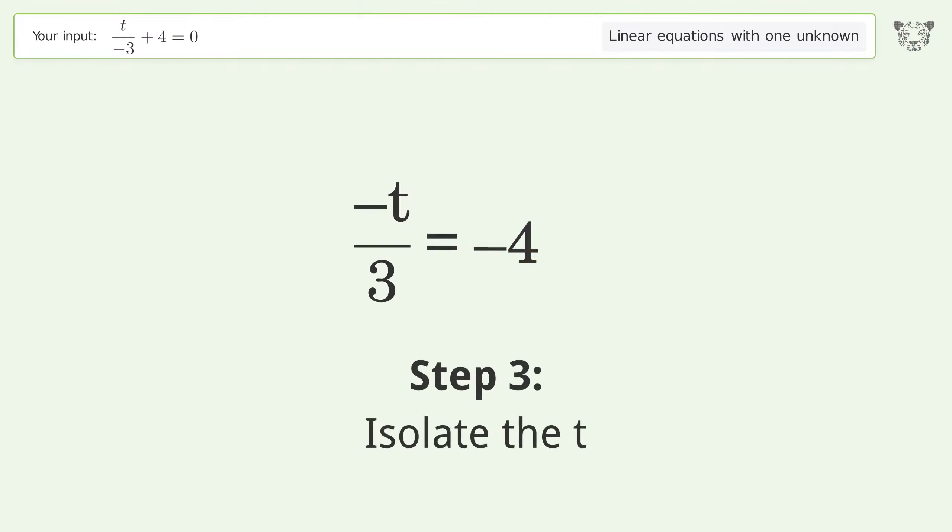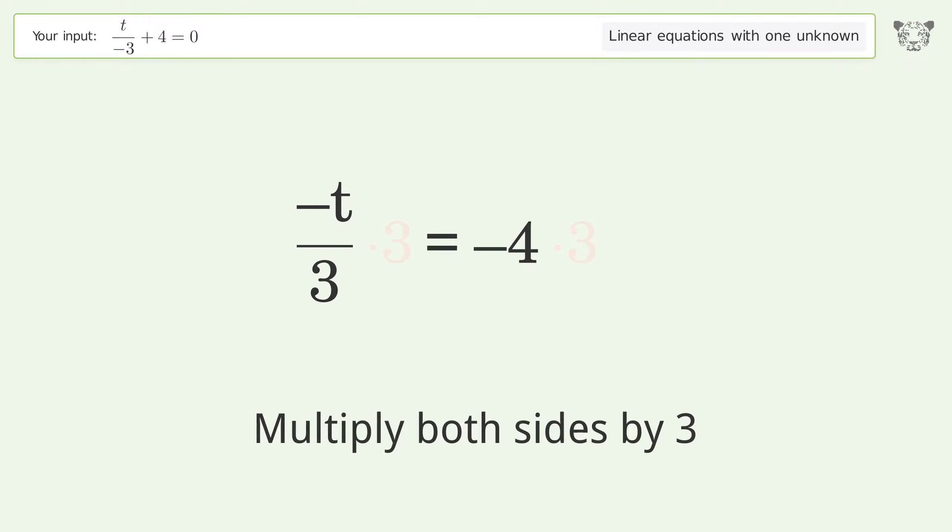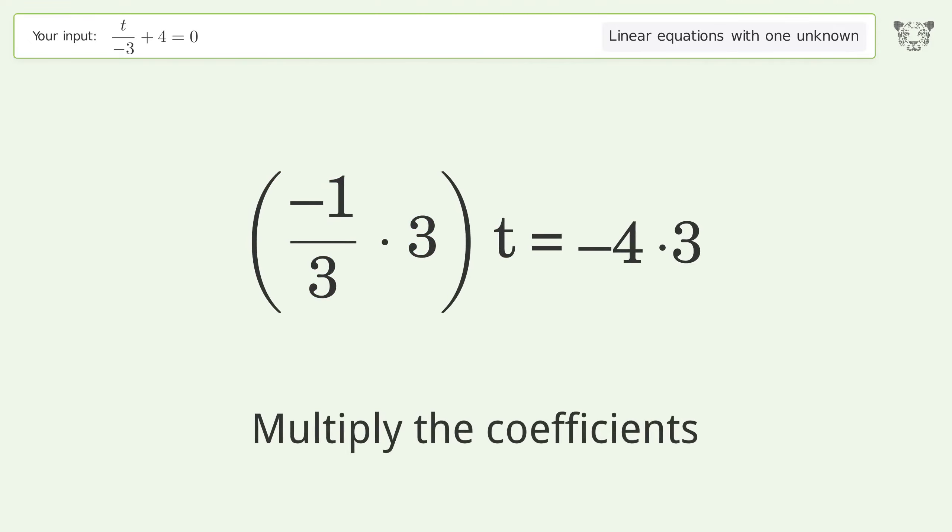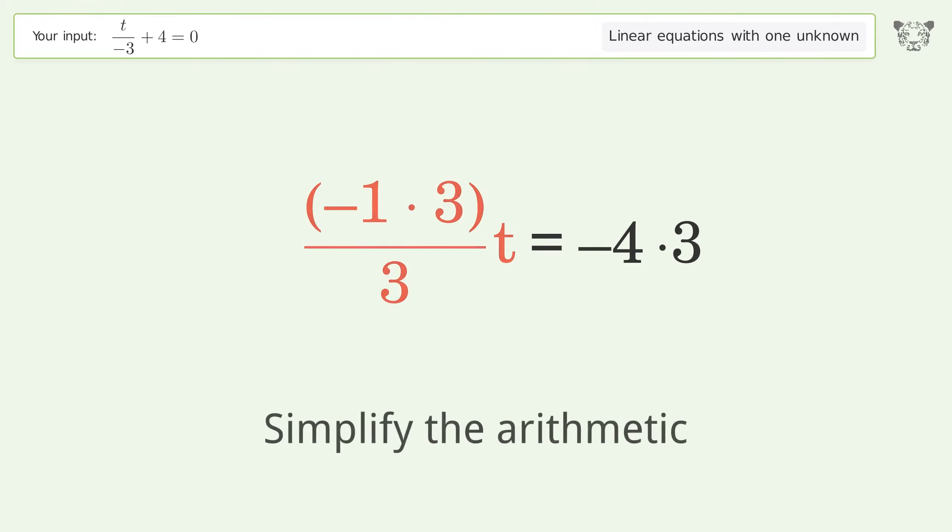Isolate the t. Multiply both sides by 3. Group like terms. Multiply the coefficients. Simplify the arithmetic.